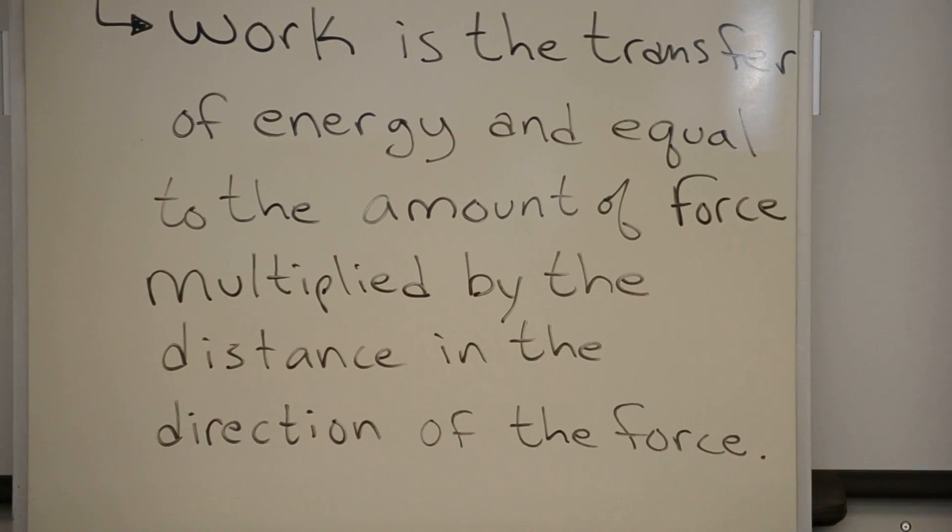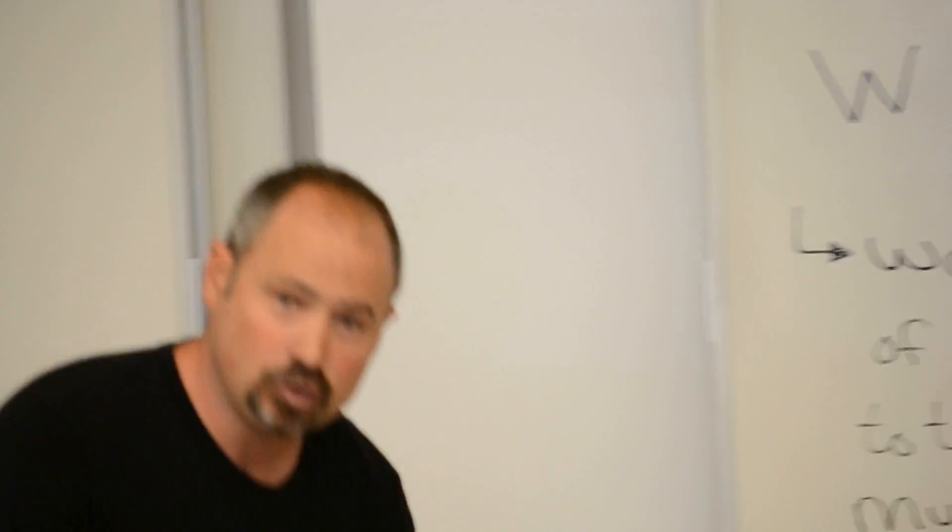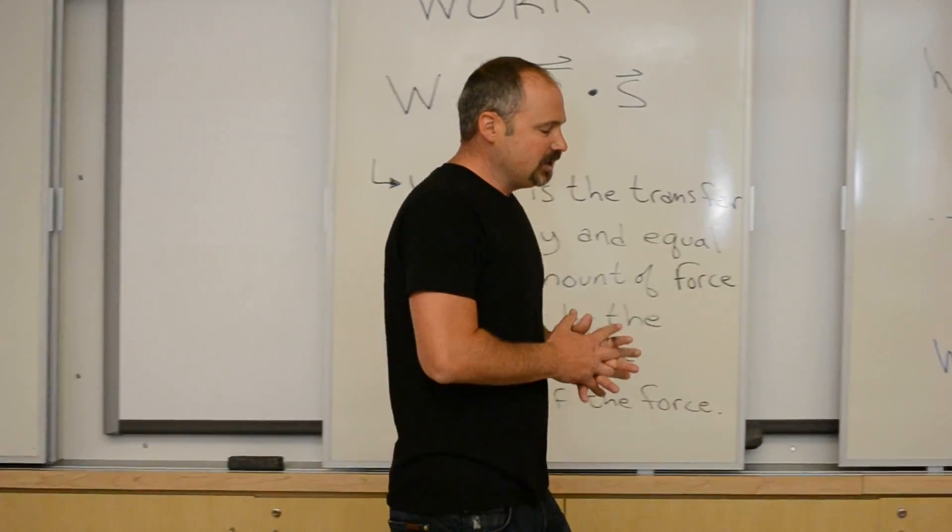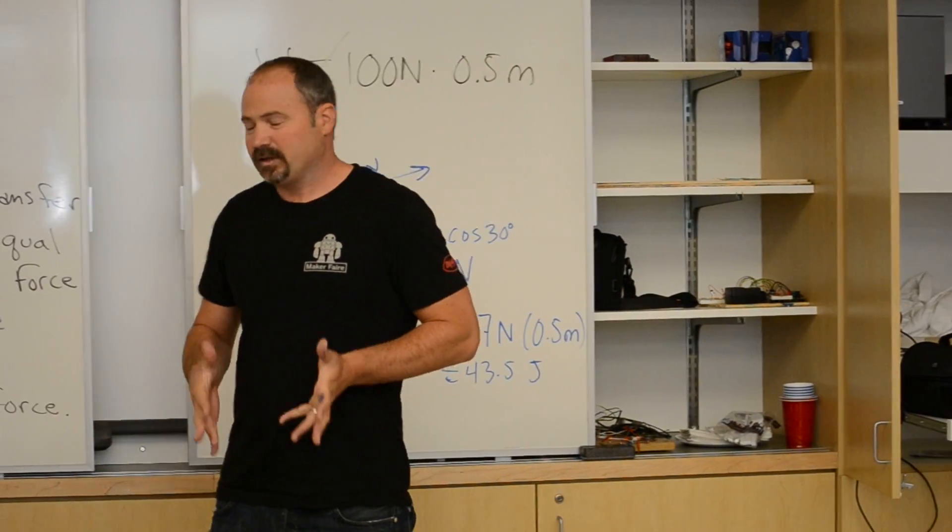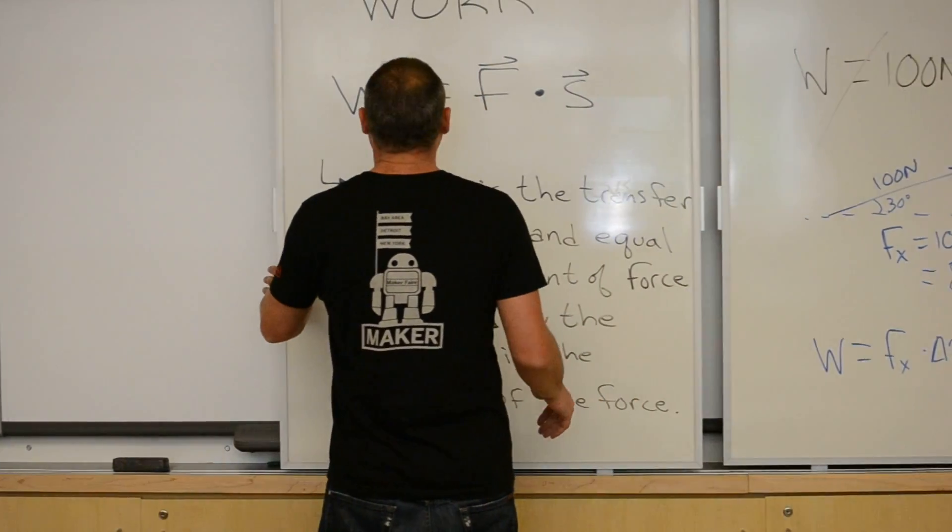Well, what that means is I transferred 43.5 joules of energy to the table. Excellent. So, that's your general definition of work and how it works. Let's go on to an example problem with friction.